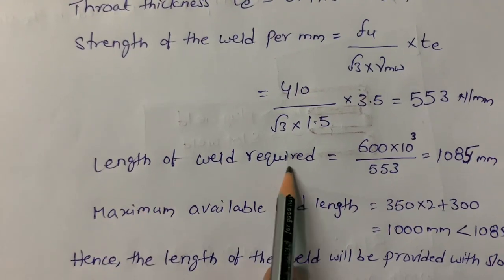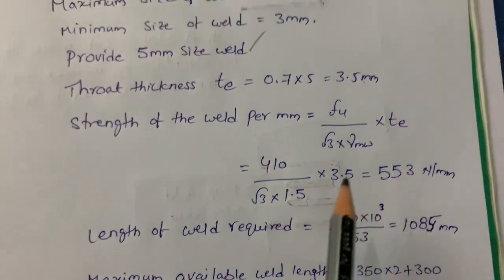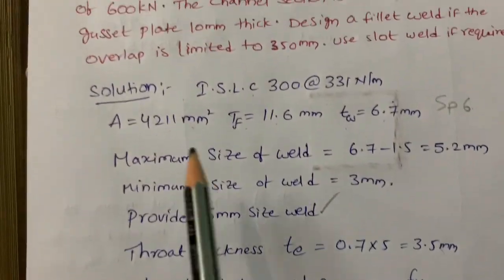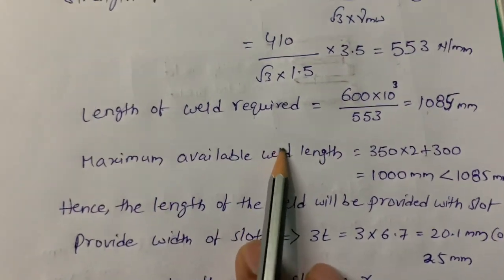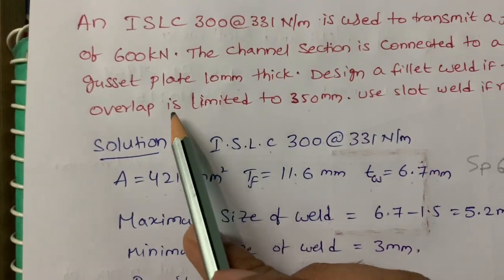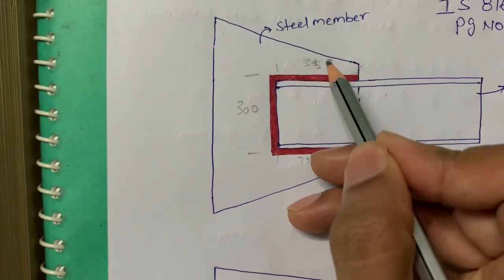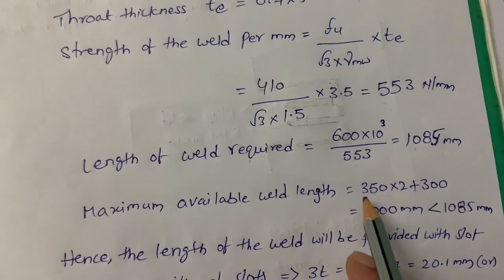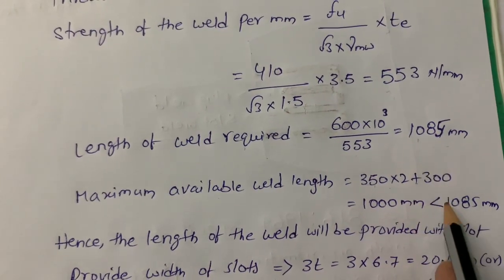Now calculate the length of weld required. Length required = Load / Strength of weld = 600 × 10³ / 553 = 1085 mm. The maximum available weld length is 350 × 2 (both overlapping sides) plus 300 (depth of section) = 1000 mm. The required length is 1085 mm, so the difference is 85 mm — this 85 mm we need to adjust by using slot weld.